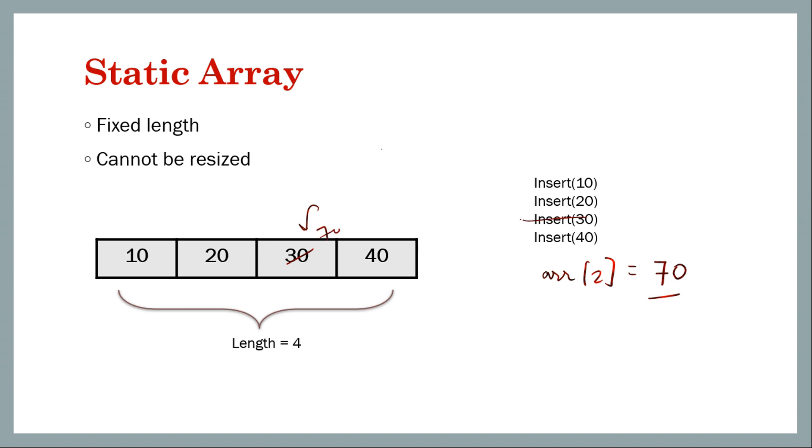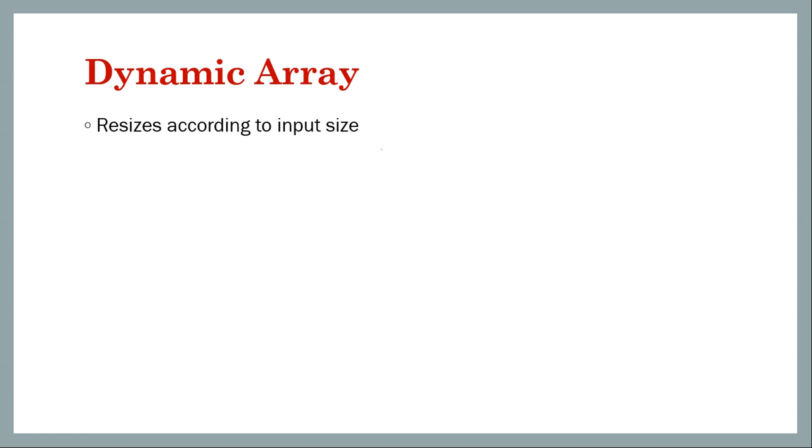But we can have only 4 elements and again these are the indices 0, 1, 2, and 3. But if we insert 50, that is if we want to insert 50 at some index 4, at fifth place, then this is not allowed. Its length cannot be resized. So this is the limitation of static array. Now let's see how dynamic array solves this problem.